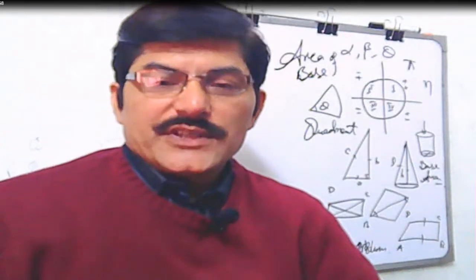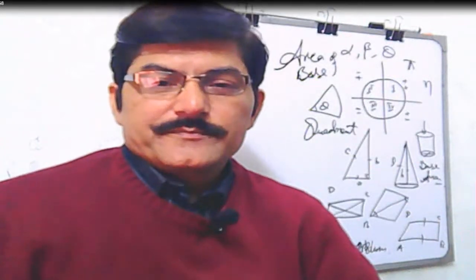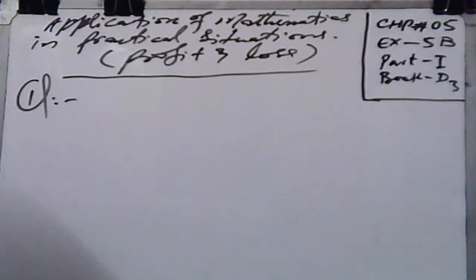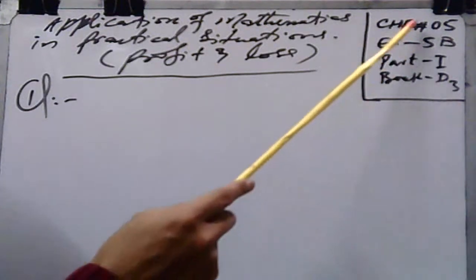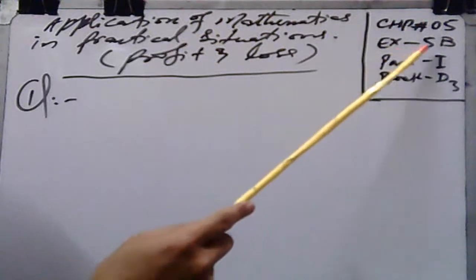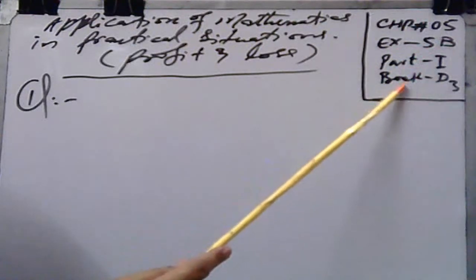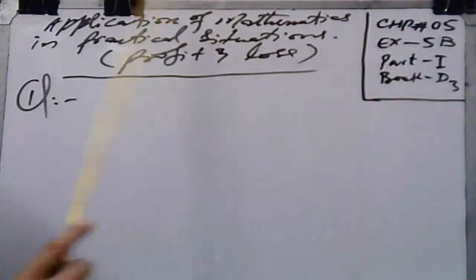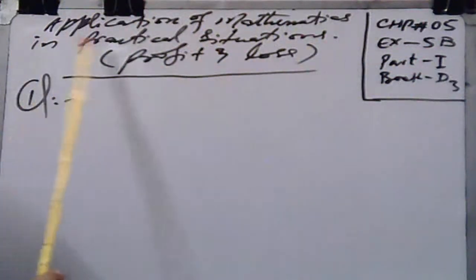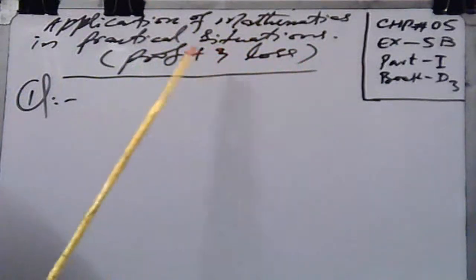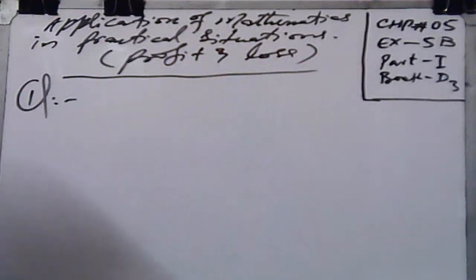Hi viewers, I'm Nadeem. Bismillahirrahmanirrahim, welcome to the Farooq Academy. Today we'll discuss Chapter 5, Exercise 5B, Part 1, Book D3 — Applications of Mathematics in Practical Situations, that is the well-known chapter on profit and loss.